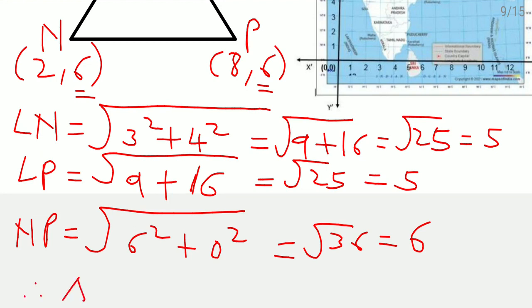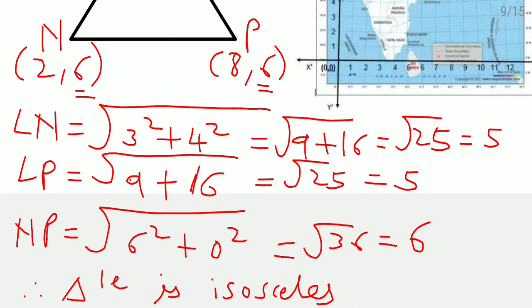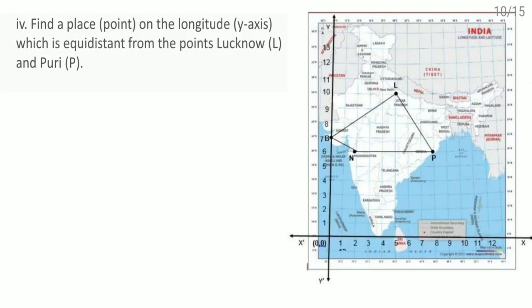Since LN equals LP equals 5 and NP equals 6, two sides are equal. Therefore the triangle is isosceles.